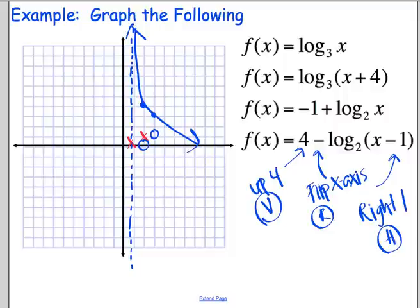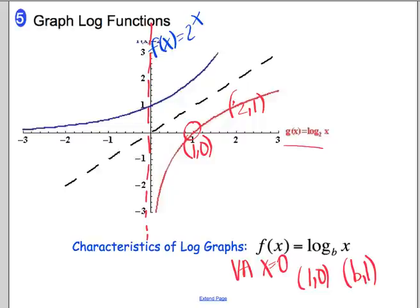The big thing to remember is the main characteristics of the log graphs: the points (1, 0) and (b, 1), and that vertical asymptote at x equals 0.